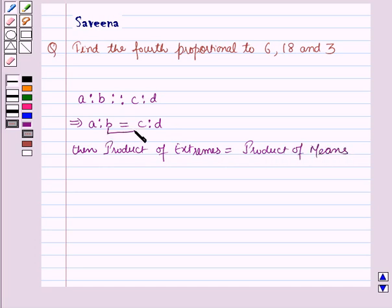Here b and c are the means, and a and d are the extremes. This implies the product of extremes will be a×d, that is ad, and product of means will be b×c, that is bc. Here a is called the first proportional,